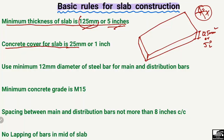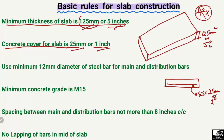Coming to the second rule for the construction of the slab: the concrete cover for the slab is 25 mm or 1 inch. If this is my slab cross-section and I provide the steel reinforcement here, the concrete cover — the distance between the steel bar and the outside of the concrete — should be equal to 25 mm or 1 inch. You should always provide the concrete cover in order to protect the reinforcement from corrosion.